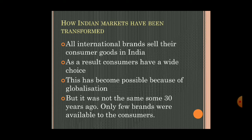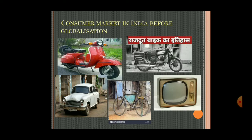But it was not the same 30 years ago — only a few brands were available to the customer. For example, looking at the consumer market in India before globalization, you can see that people were using Bajaj scooters, Ambassador cars, bicycles, black-and-white TVs, and Rajdoot bikes. These were the few things and equipment we were using.